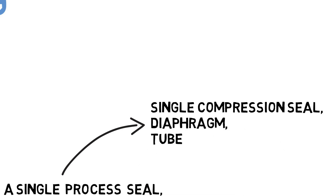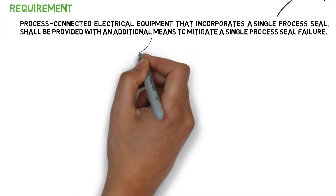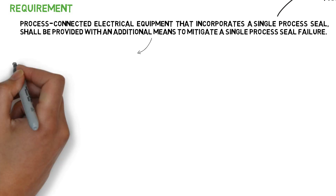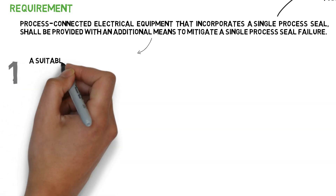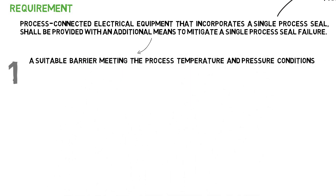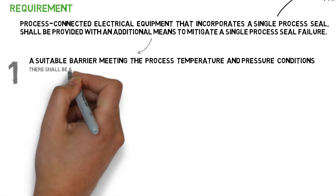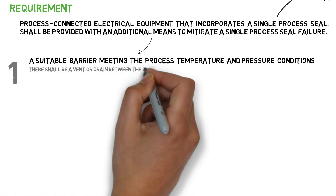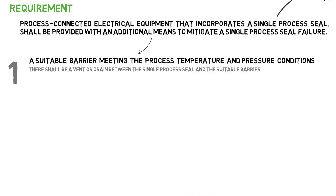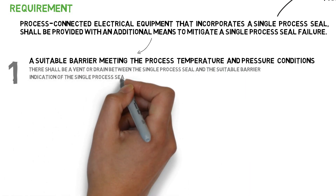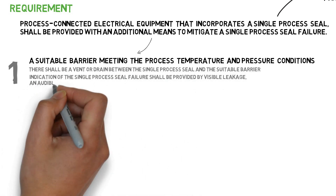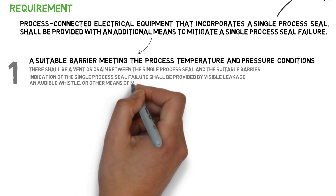Examples of a single process seal include a single compression seal and a diaphragm. Additional means include: a suitable barrier meeting the process temperature and pressure conditions, with a vent or drain between the single process seal and the suitable barrier. Indication of single process seal failure shall be provided by visible leakage, an audible whistle, or other means of monitoring.